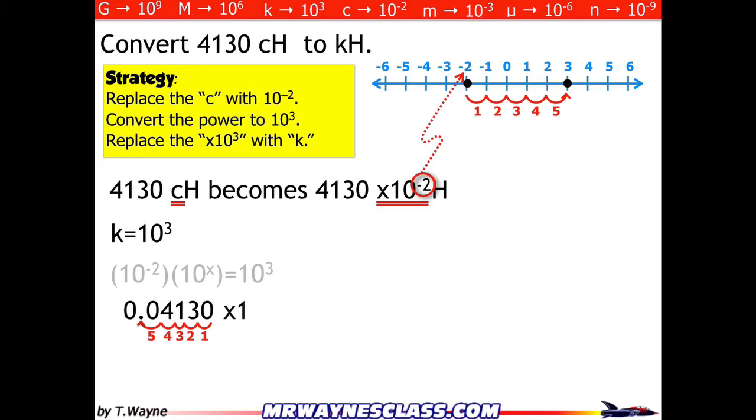And that way, if I write that, then that becomes times 10 to the third. So now I've gone from 4130 times 10 to the negative 2 to .04130 times 10 to the negative 3. And all I'll do is replace the times 10 to the negative 3 with a K to make kilohenrys.